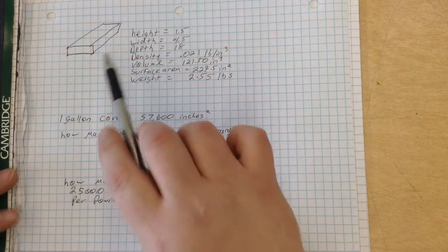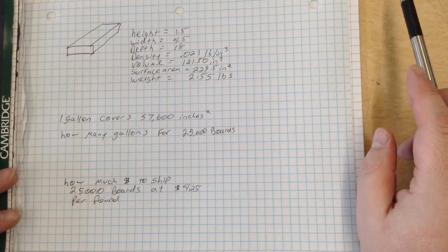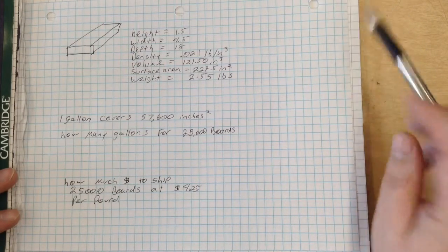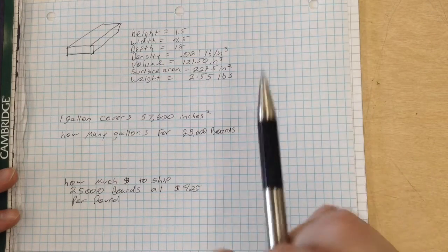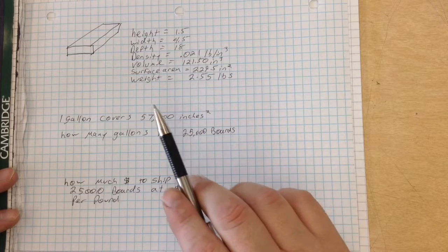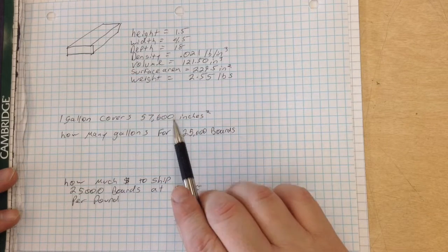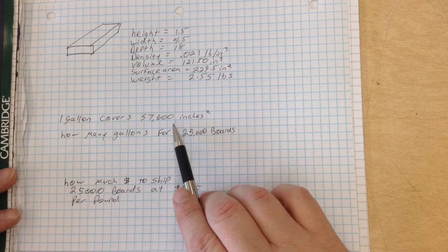We're going to take a few minutes and continue working on our board right here. This particular question asks if one gallon covers 57,600 square inches,